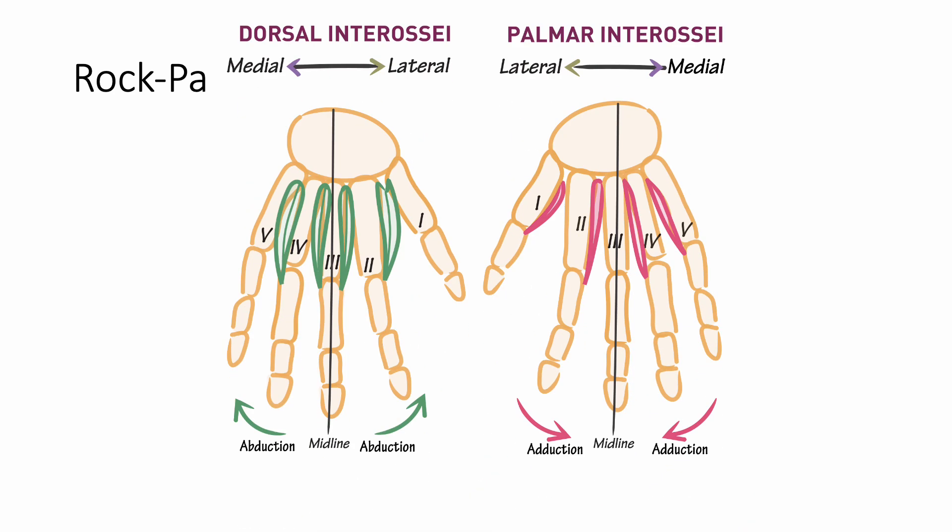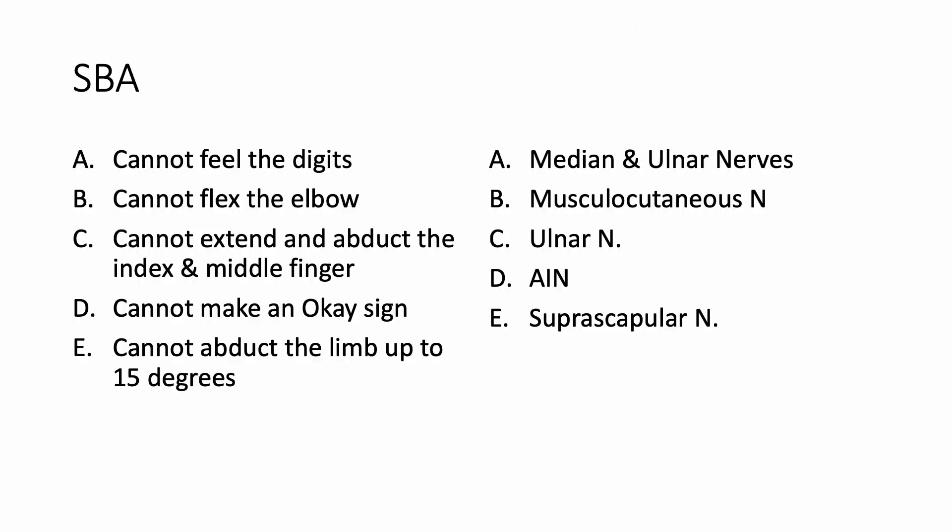You also need to understand that abduction and adduction of the digits is because of the intrinsic muscles of the hand, which we call lumbricals — palmar interosseous and dorsal interosseous. Palmar interosseous is PAD — they do adduction, they bring the fingers closer. Whereas the dorsal interosseous are called DAB. So that is the ulnar nerve.